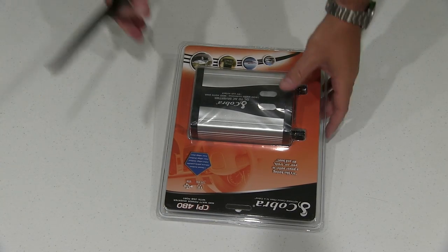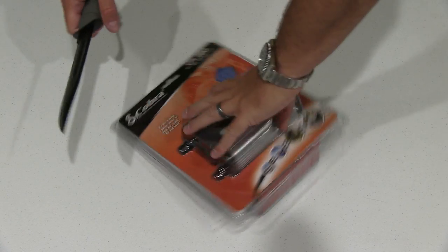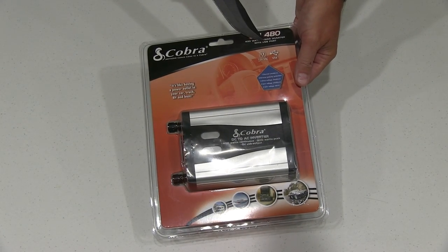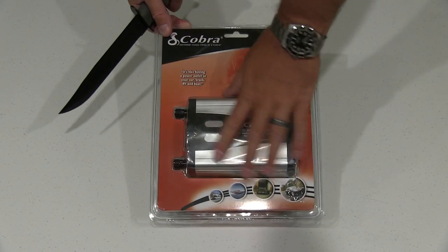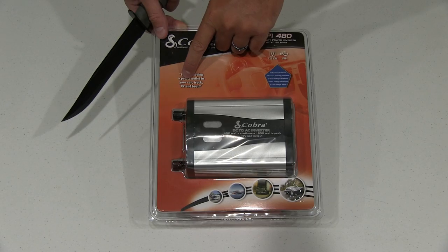Hey y'all, Irish Guy here. I'm back again with another unboxing video. This is made by Cobra and it is a 400-watt power inverter, so it converts battery to AC. You could use this—as it says here—it's like having a power outlet in your car, truck, RV, and boat.